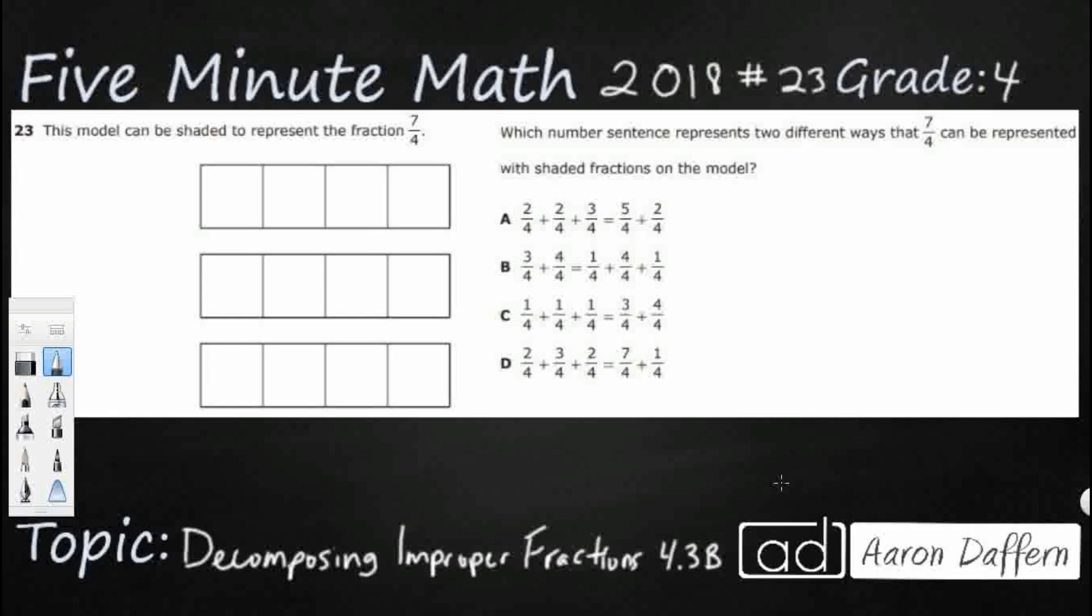So we have a model here that can be shaded. We've got these three right there, those three different fourths. We're trying to find different ways to represent 7 fourths. So we've got this model that we can use and we've got these different number sentences here. So let's just see if we can take a look to see which of these work for us here.